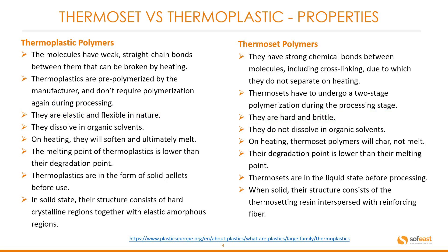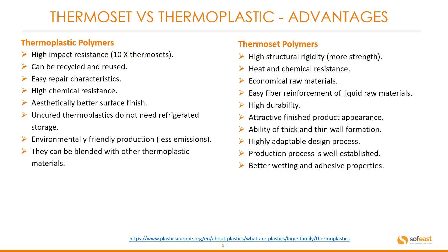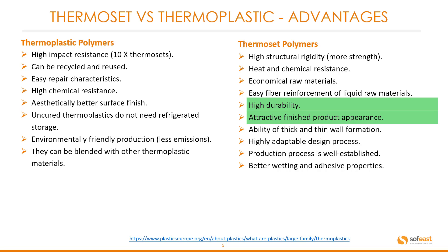You can pause this slide to go through each of the comparisons in your own time. Looking at the advantages for each polymer type: thermoplastic polymers have high impact resistance, which is around 10 times more than that of thermosets. Whereas the advantage of a thermoset is high structural rigidity giving it more strength. Thermoplastics also have high chemical resistance, while thermosets offer high durability and an attractive finished product appearance.